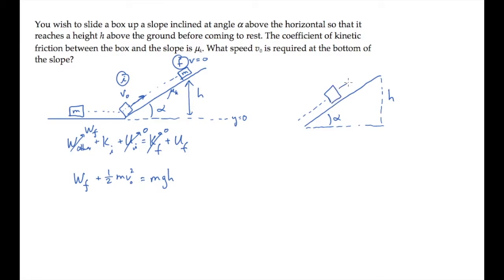The box's motion is directed up the ramp, while the force of friction is directed opposite that, and down the ramp. The work equals the magnitude of the force times the distance traveled times cosine of the angle between those two vectors.